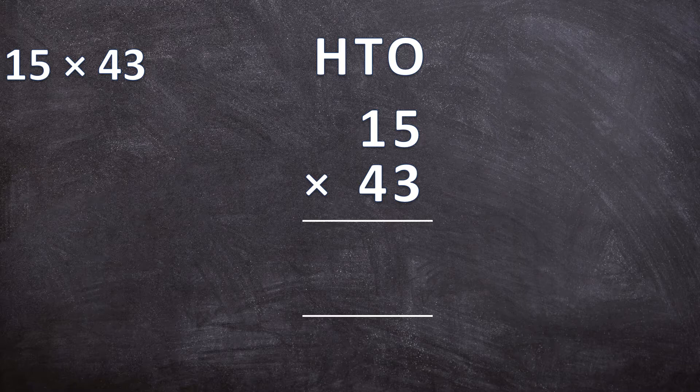And now, if I told you to go ahead and multiply 15 by 43, that would be really hard. That is why we break it down step by step to make it a lot easier for ourselves. So when you're multiplying by a two-digit number, you're going to take that bottom number and break it up so that we have 3 and 40. Don't worry if it's a bit confusing — you'll see now exactly what I mean.